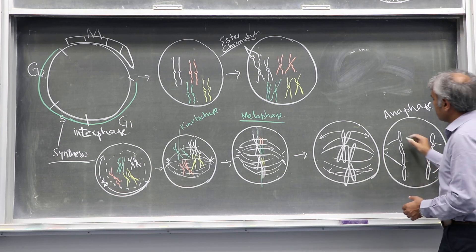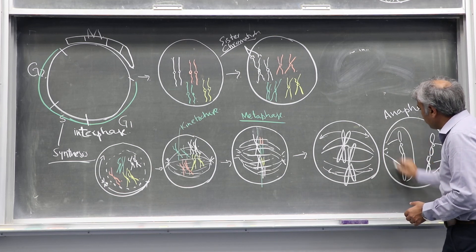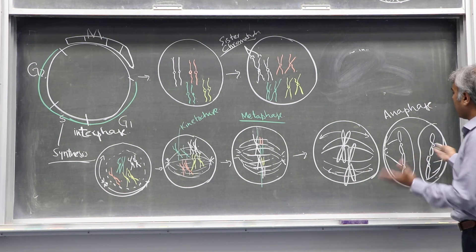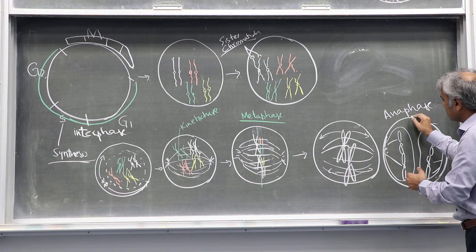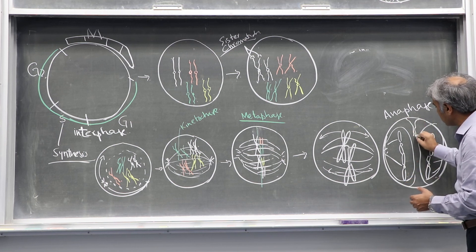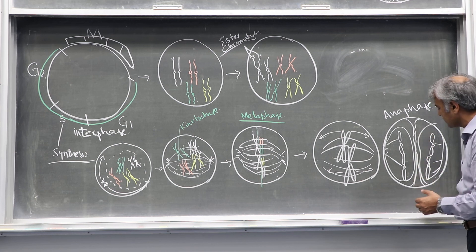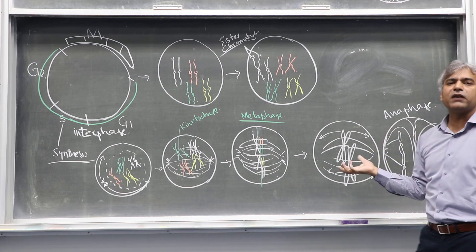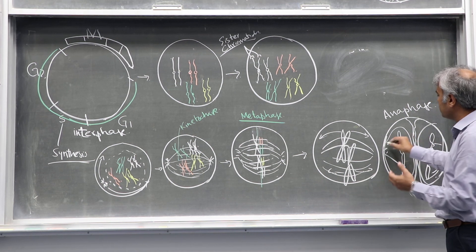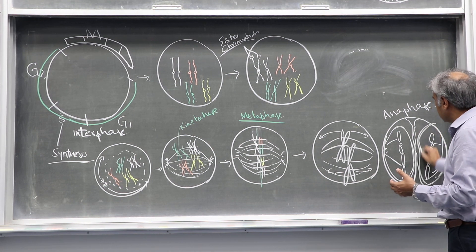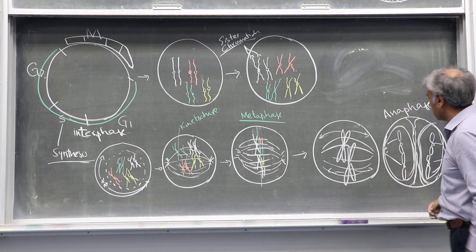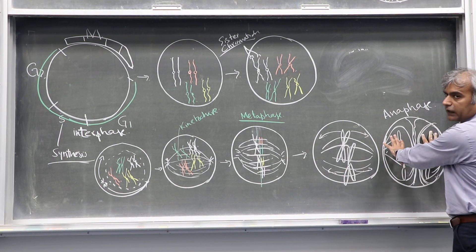Eventually, the nuclear membrane starts appearing again. When the nuclear membrane appears, the cell membrane gets constricted. This stage is called cytokinesis, and the two cells split from each other — that is the completion of mitosis. When the two cells separate, the nuclear membrane appears and constriction of the cell membrane takes place. This stage after anaphase is called telophase, followed by cytokinesis.